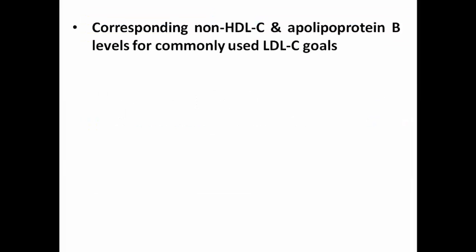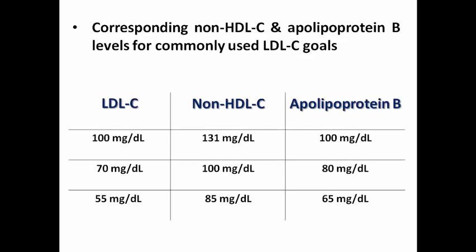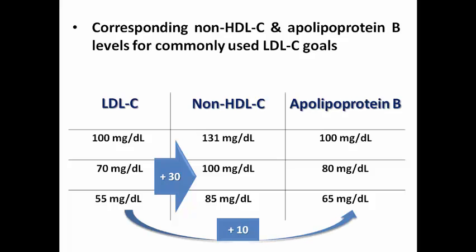We need to know how to calculate the corresponding levels of non-HDL and ApoB lipoprotein compared to LDL goals. This table illustrates the equivalent levels. To make it simpler: to convert from LDL to non-HDL, you add approximately 30 mg/dL, whereas to convert from LDL to ApoB lipoprotein, you add 10.